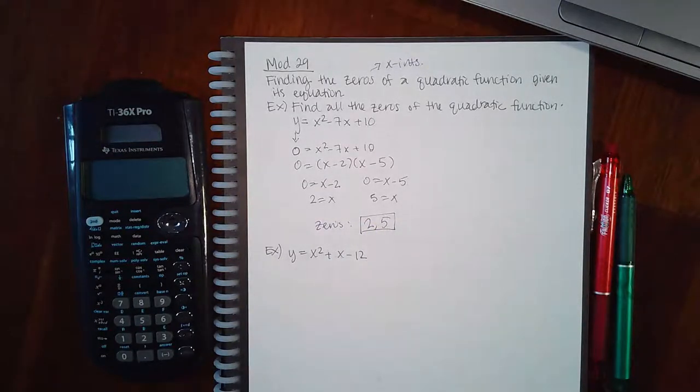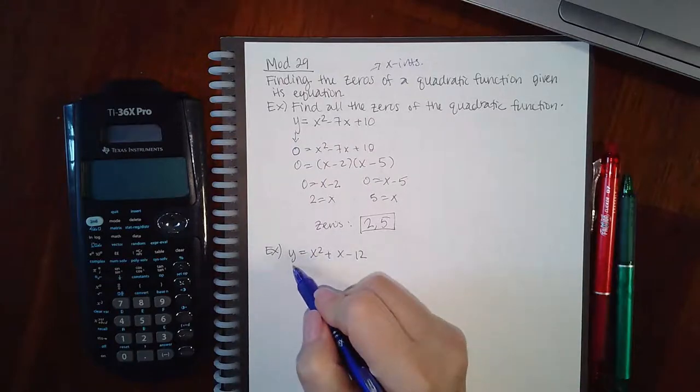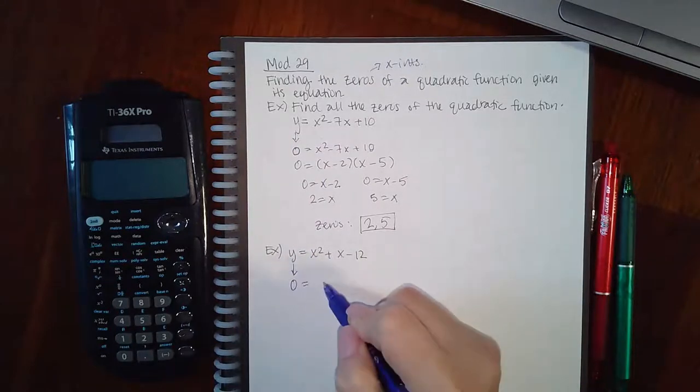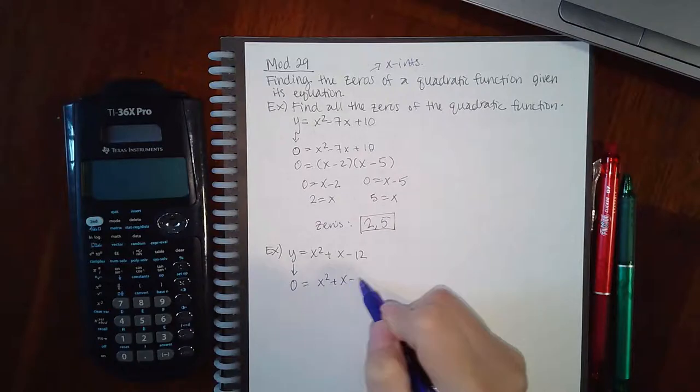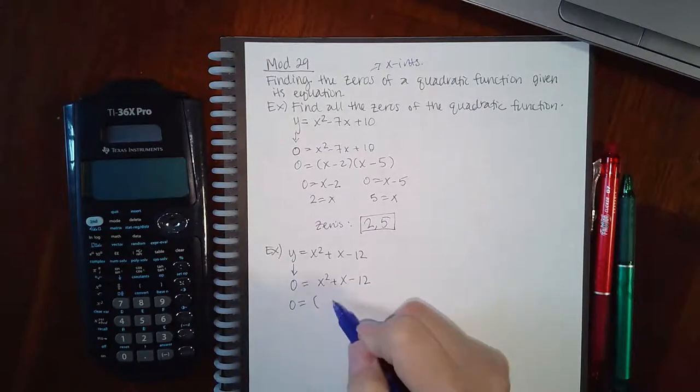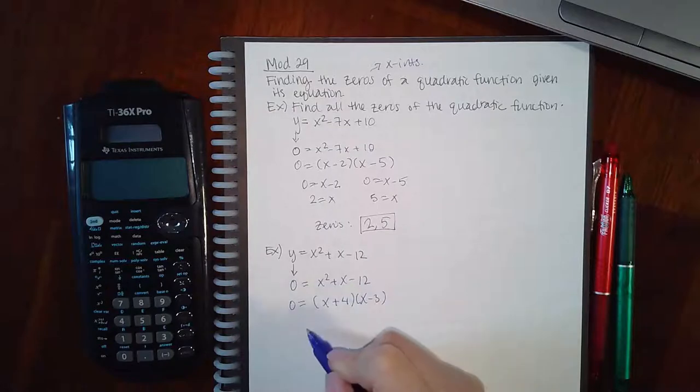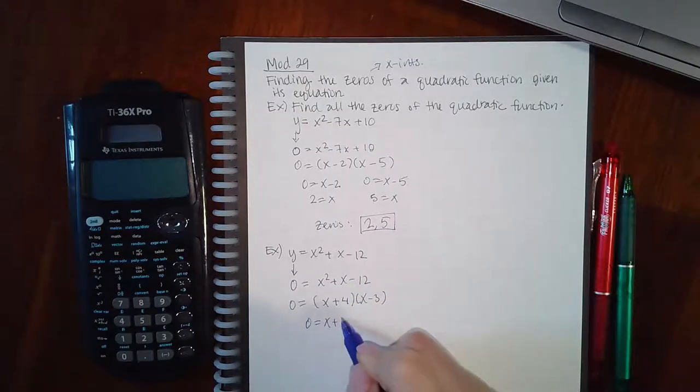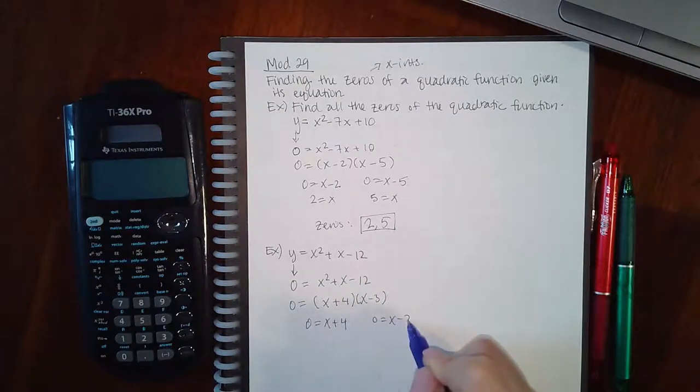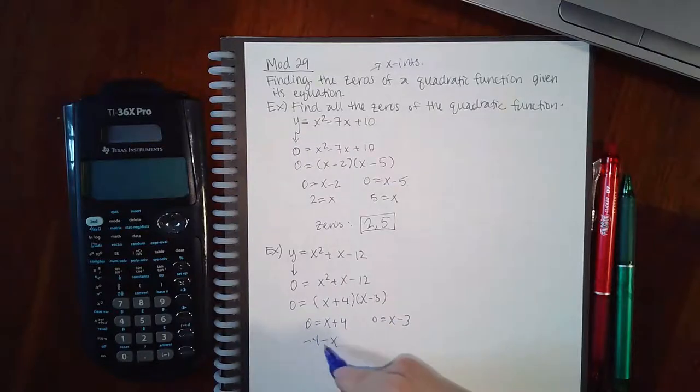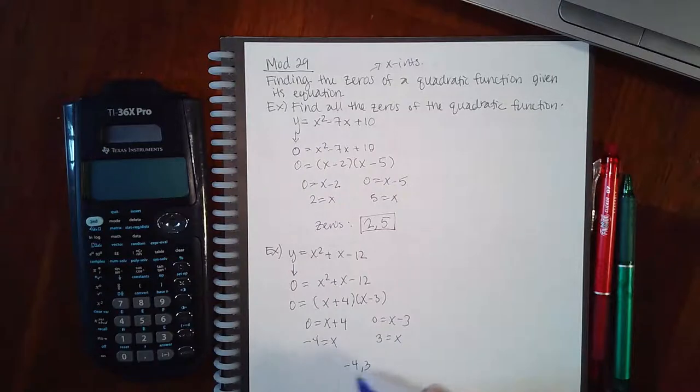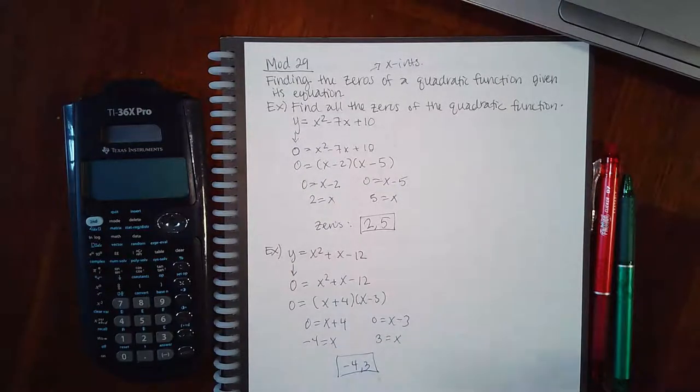For the next function, it really doesn't matter what the function looks like. Again, you're still setting your y-value equal to zero. If you can factor this relatively easily then you would want to go ahead and do that, then set each factor equal to zero again and solve for x. You get negative 4 and 3 as your zeros for this particular problem.